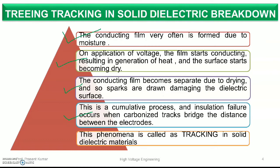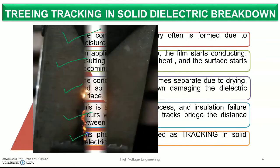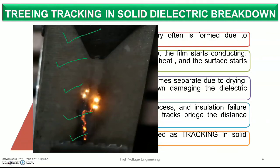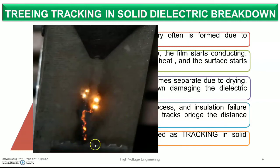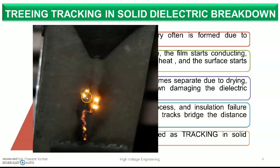The sparks are drawn, damaging the dielectric strength, and due to this, sparking and internal discharge occur in a cumulative process. Insulating failure occurs when the carbonized track bridges the distance between the electrodes. The internal discharge — that spark — is called treeing, and tracking is the process of tracing that path. The breakdown region forms like a tree shape on the surface.